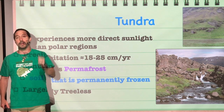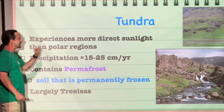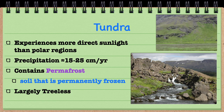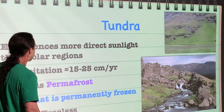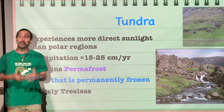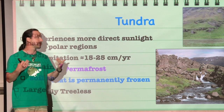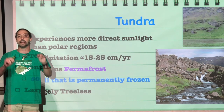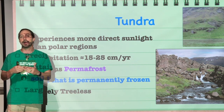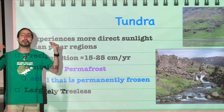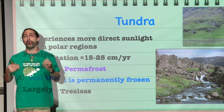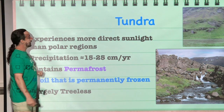Moving southward a little bit from the North Pole, we would get to the tundra. It experiences a little bit more direct sunlight than the polar regions, so it's going to be slightly warmer and will have more light energy. The precipitation is approximately 15 to 25 centimeters a year, which is not a lot but is enough to support plants growing. It contains permafrost, though — a layer underneath the soil that is permanently frozen — and that reduces the size of plants that can grow because their roots can't penetrate through the permafrost. That's why you won't find trees in a tundra; it is normally dominated by bushes or grasses.